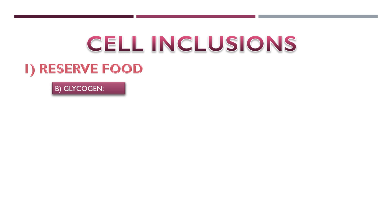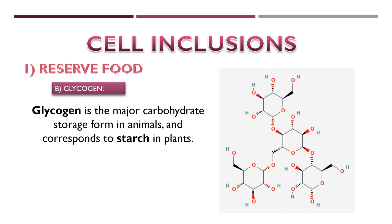Secondly, glycogen. Glycogen is the major carbohydrate storage form in animals. It corresponds to starch in plants. Plants store starch and animals store glycogen — it is a major storage carbohydrate.